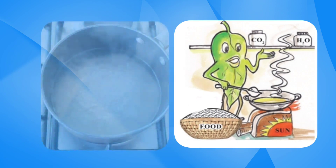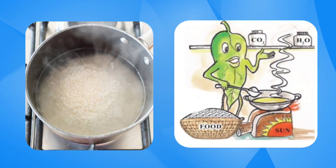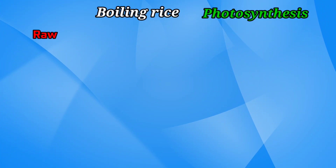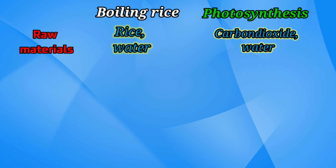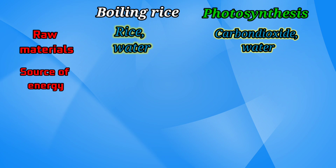Friends, the process of photosynthesis is like boiling rice in our kitchen. Let us compare them. The raw materials to boil rice are rice and water; for photosynthesis, carbon dioxide and water. The source of energy for boiling rice is flame from the stove;